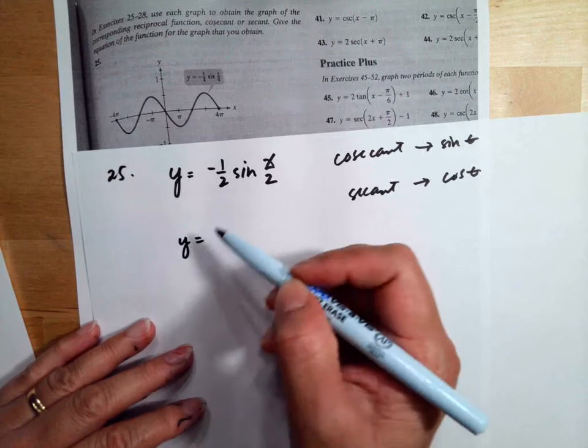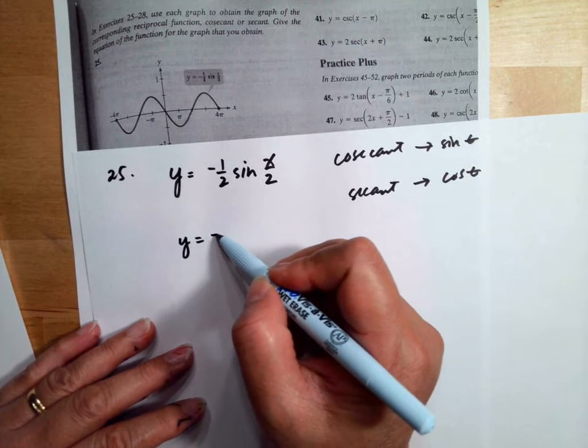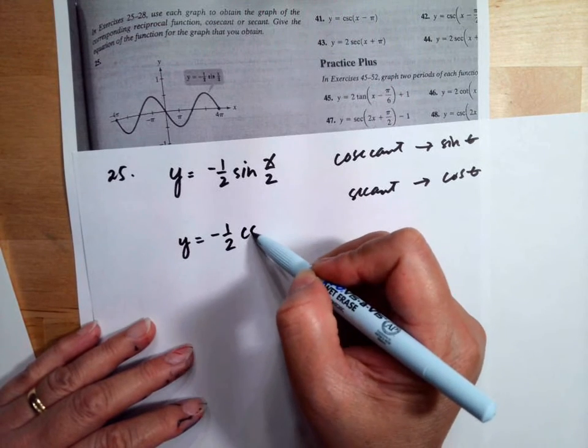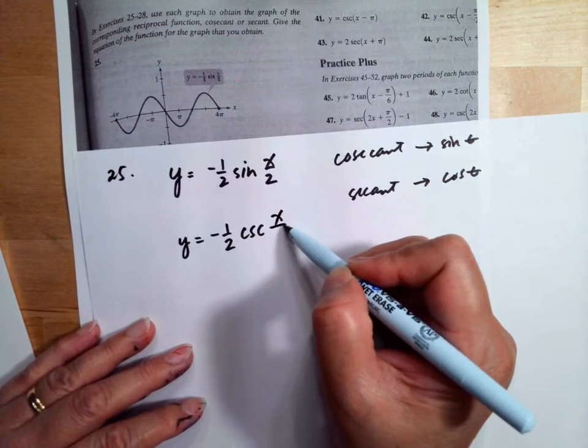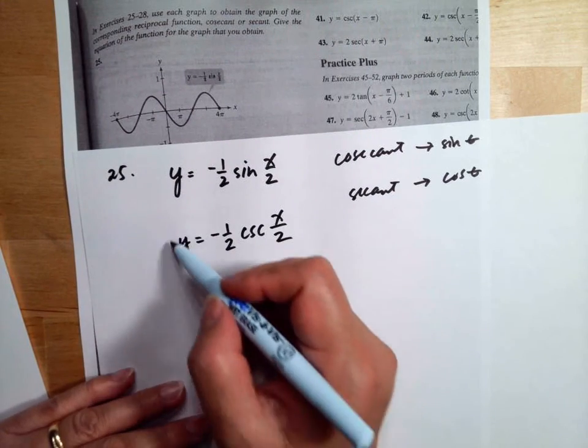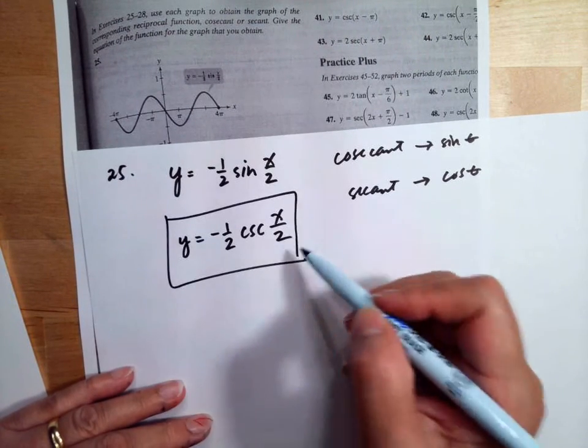So the function will be y equals negative one-half cosecant of x over 2. This will be the answer for number 25.